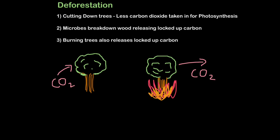As well as sulfur dioxide, we're also increasing the levels of carbon dioxide in the atmosphere through deforestation. That means cutting down trees. So if we're cutting down trees, there's less carbon dioxide taken in through the process of photosynthesis.